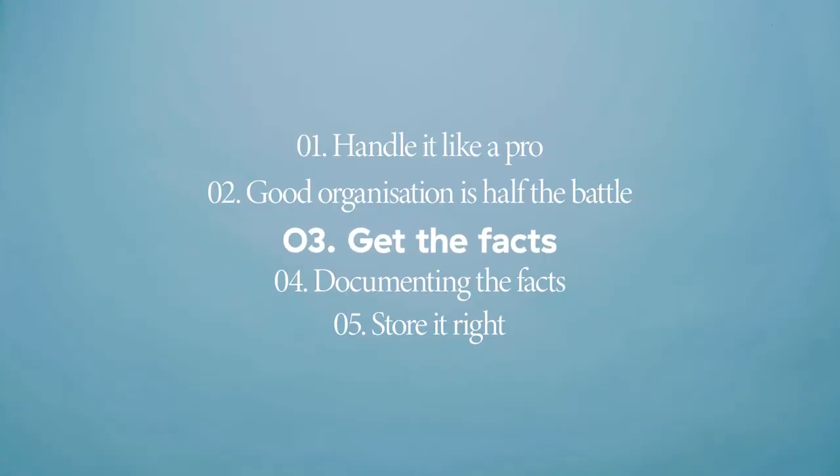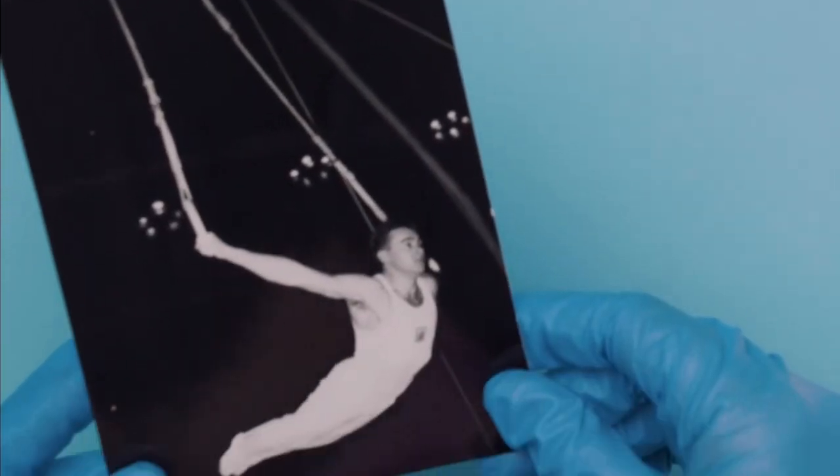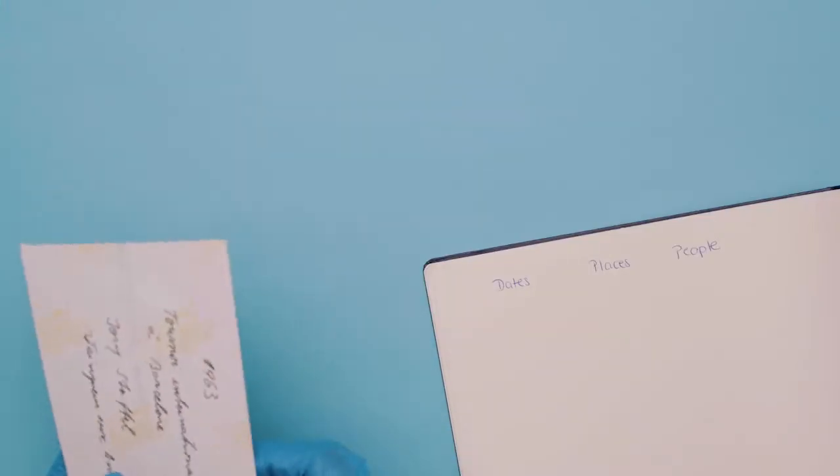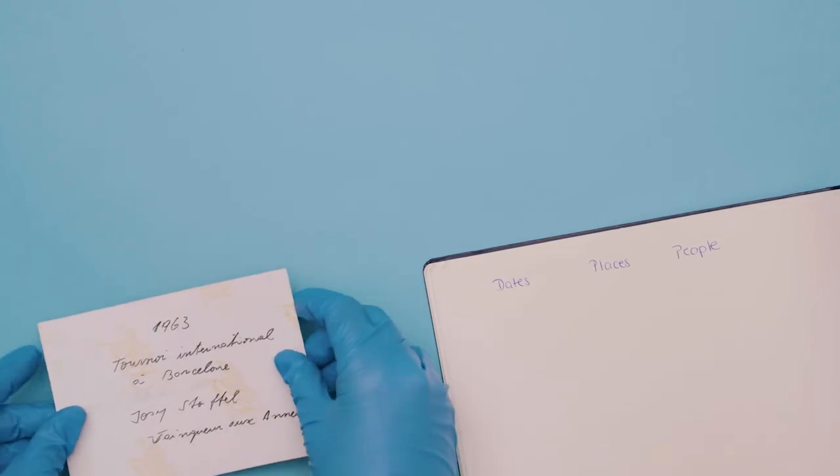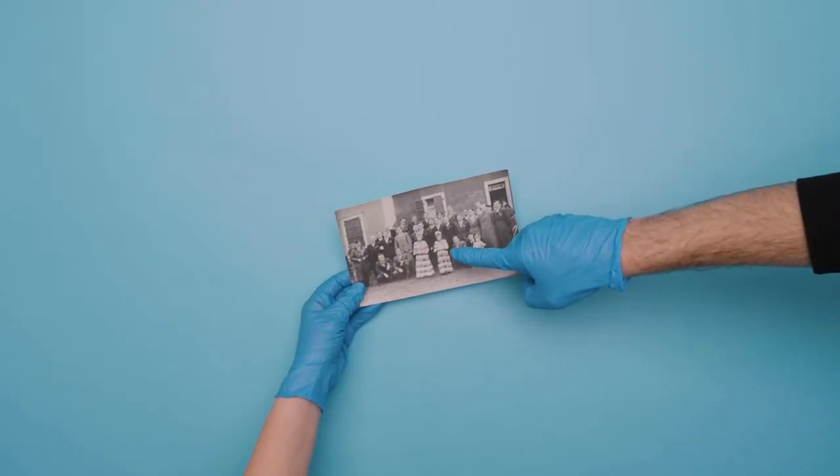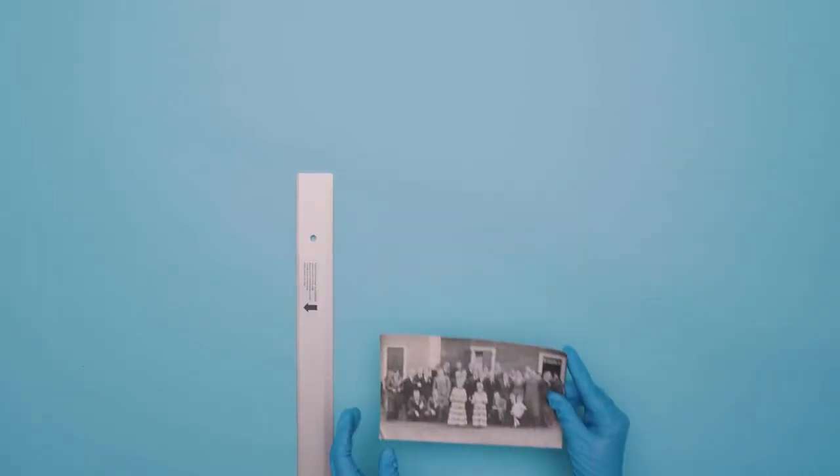Three. Get the facts. The next important step is to gather as much information as you can. Dates, places and people are always a good place to start. Get your family members involved. They might know facts about the document you were unaware of.